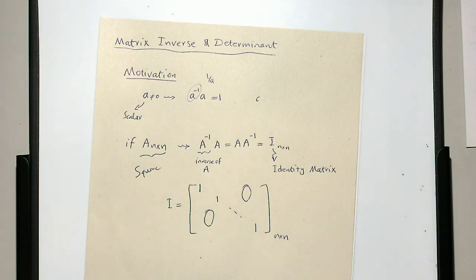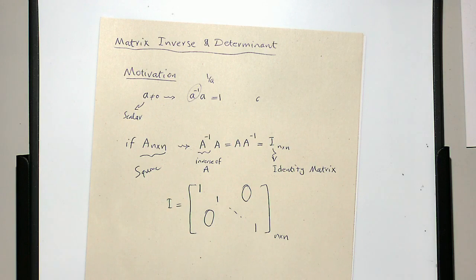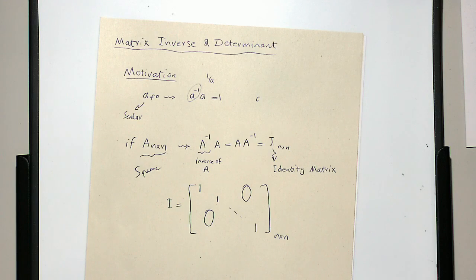We can have inverse operations for square matrices only. It is analogous to scalar algebra. The key question is: how do we actually compute A⁻¹? It does NOT mean inverting each element. It is more involved, and to compute it we first need to understand the matrix determinant.